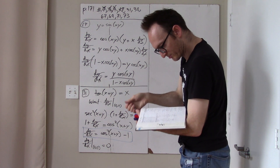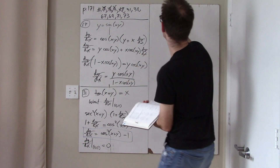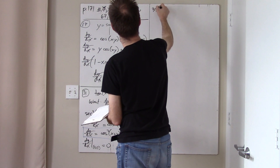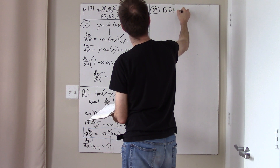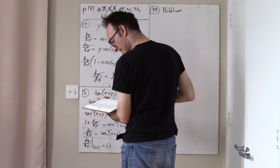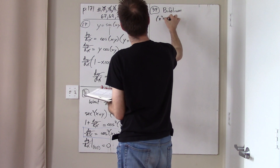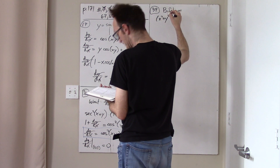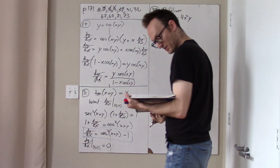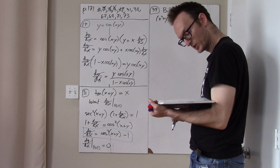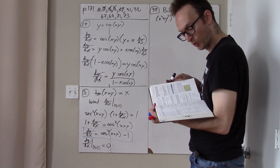Problem 38 — well, at least we get a picture now. Problem 37 is a thing called a bifolium. You've probably never heard of this before. Interesting curve: (x² + y²)² = 4x²y.